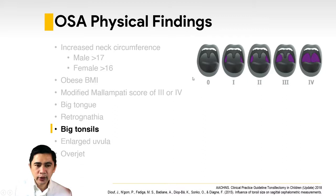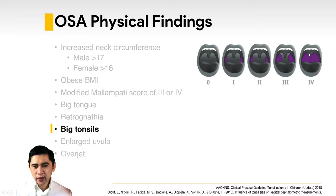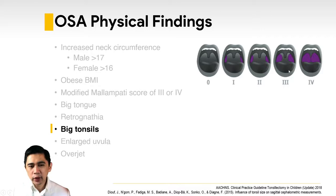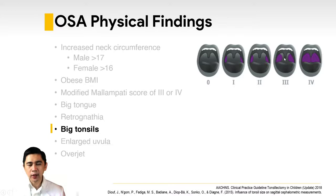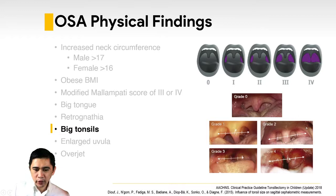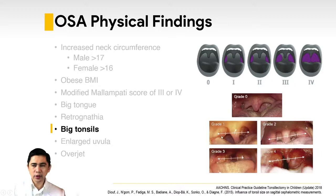Tonsil size is graded 0 to 4. Grade 0: no tonsils visible. Grade 1: barely perceptible at the pillars. Grade 2: less than 50% of the distance from the pillar to the uvula. Grade 3: more than 50%. Grade 4: kissing tonsils at the midline. Grade 3 or 4 carries a higher risk for OSA.